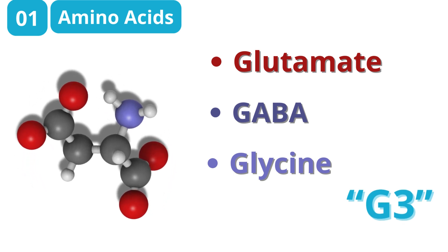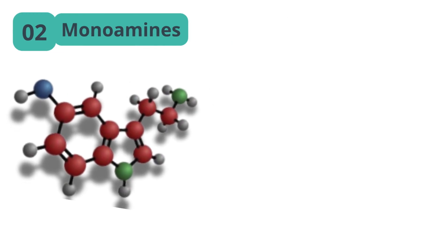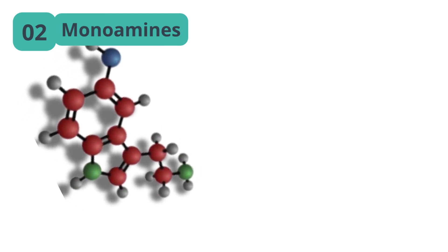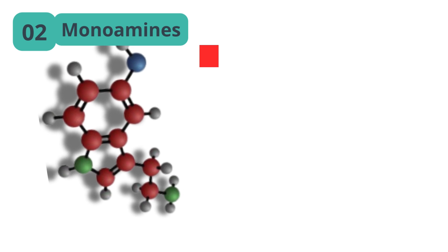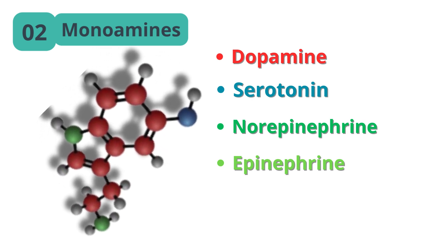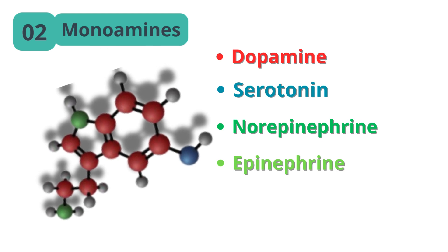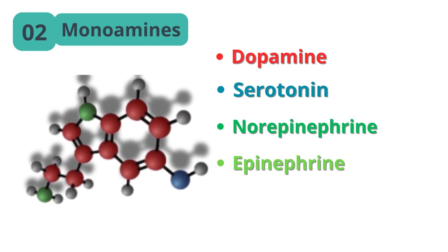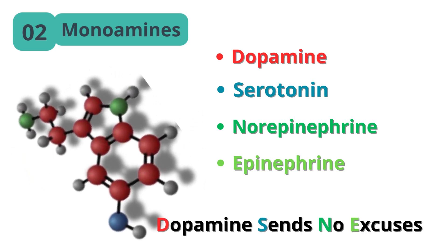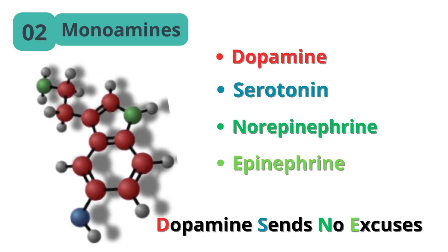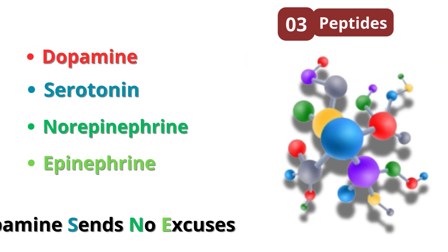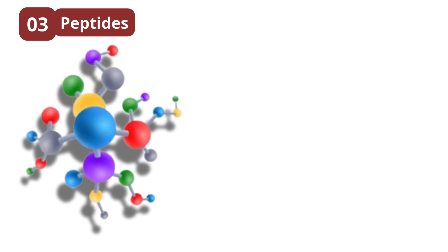Monoamines are derived from amino acids and regulate mood, emotion, and attention. Examples are dopamine, serotonin, norepinephrine, and epinephrine. Dopamine is your brain's reward system, serotonin is the mood stabilizer, and norepinephrine is the fight-or-flight responder. Mnemonic for monoamines: 'Dopamine Sends No Excuses' — D for dopamine, S for serotonin, N for norepinephrine, and E for epinephrine.